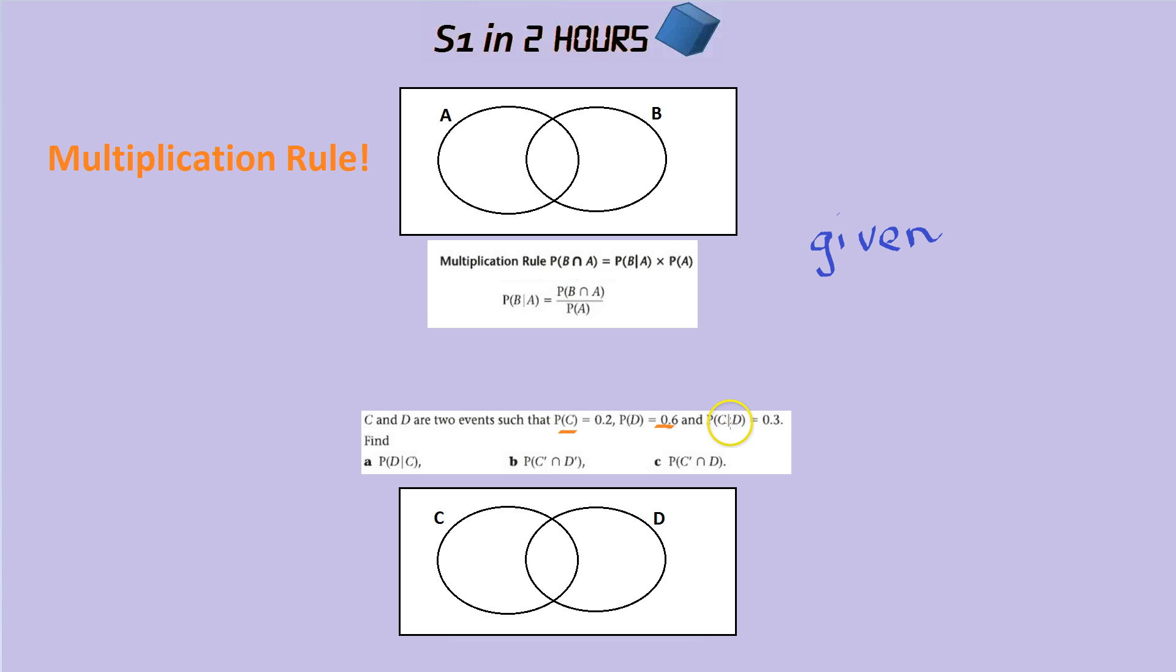Let's put that into the formula. In fact, let's even do it without even looking. So try and avert your eyes from the formula, just try and remember. So the probability of C given D, which in this question is 0.3, is, remember, it's the overlap.